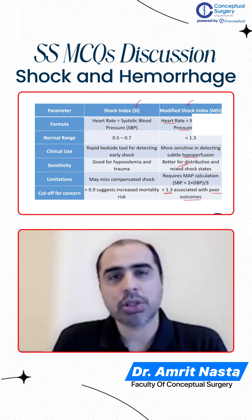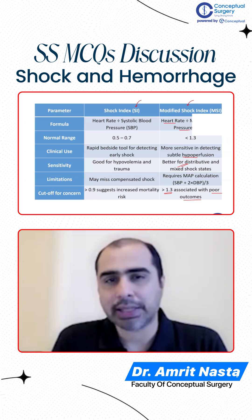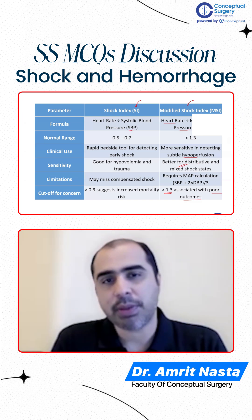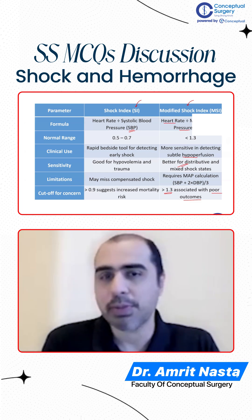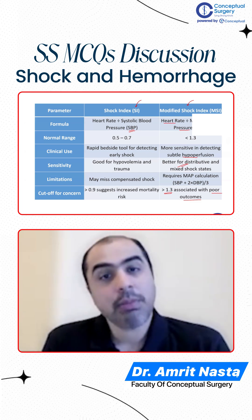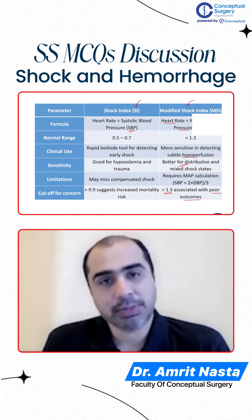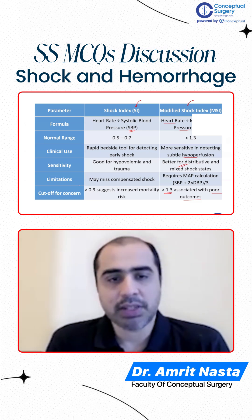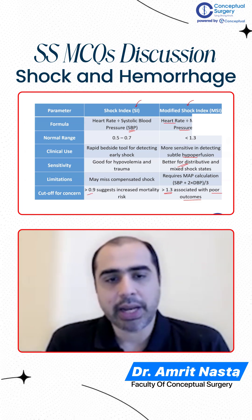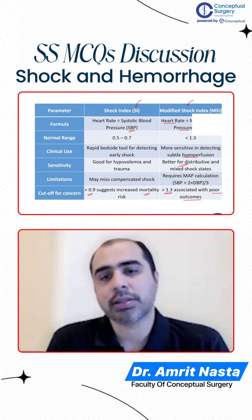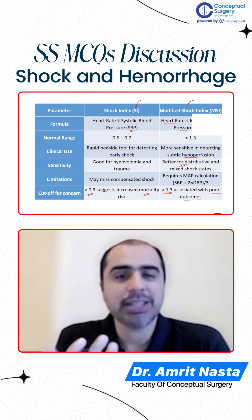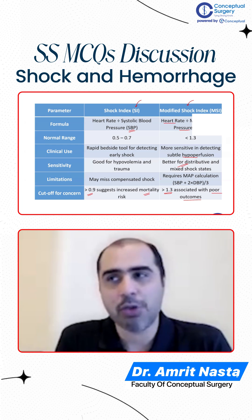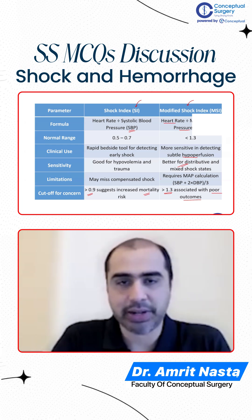Earlier, they used to use shock index, which was heart rate upon SBP. SBP is not the best marker of organ perfusion — mean arterial pressure is better. With the old shock index, if it is more than 0.9, it has a high mortality risk. But between the two, the modified shock index is more valuable — that's why they came up with the modification.